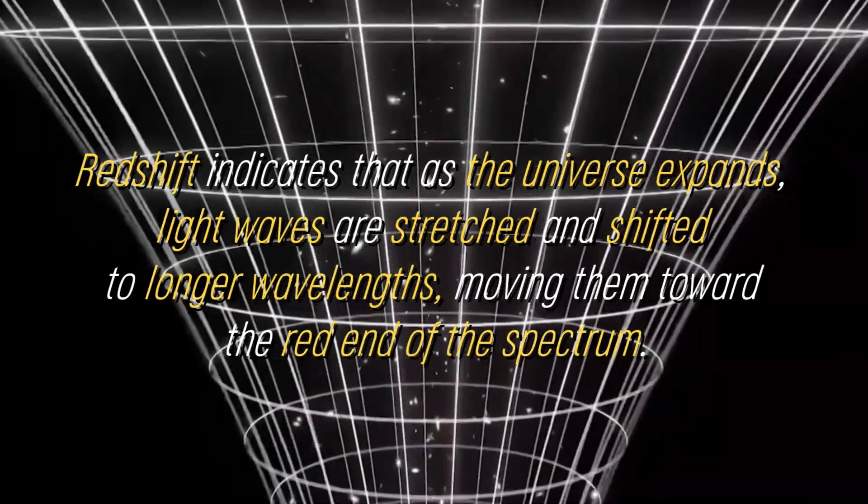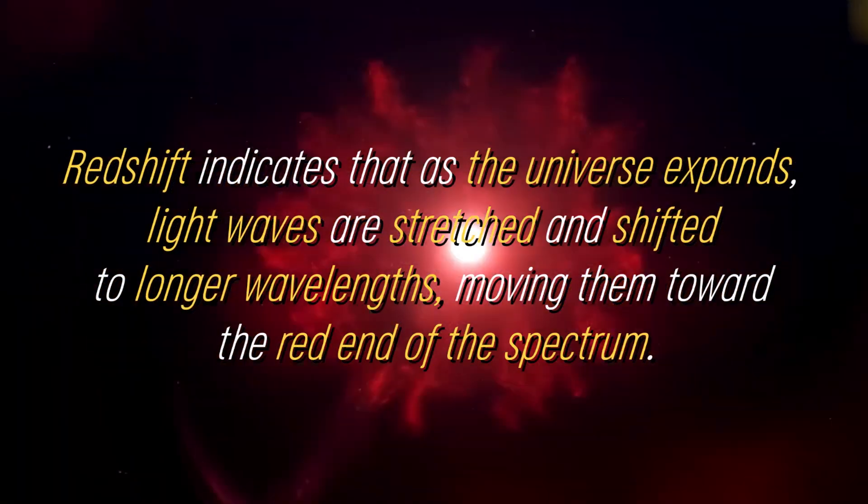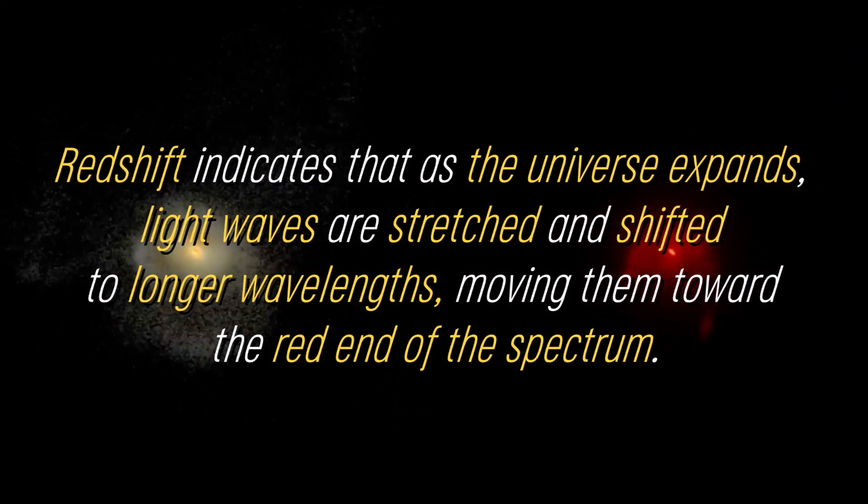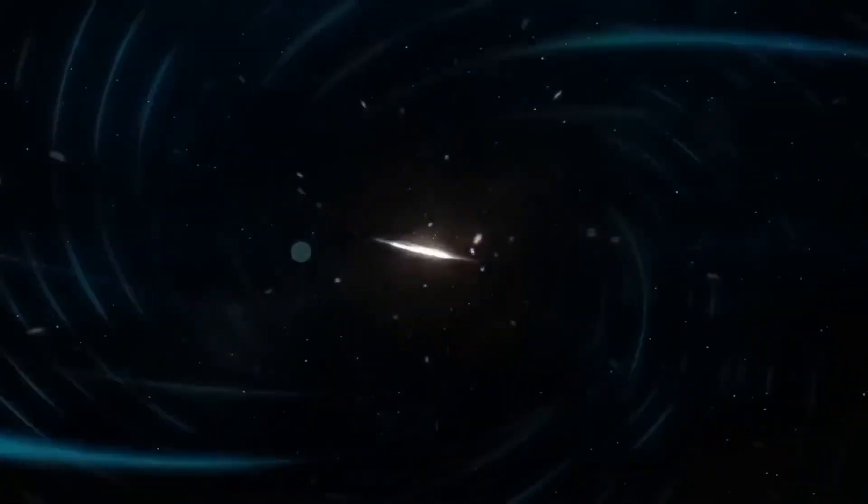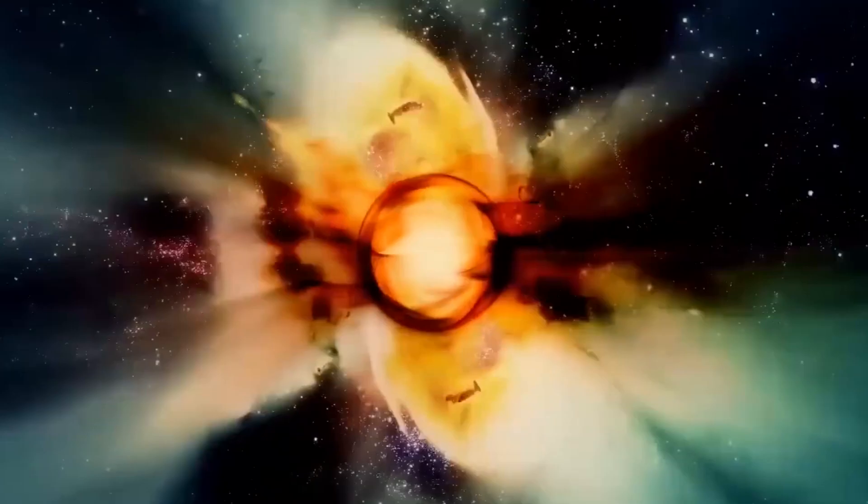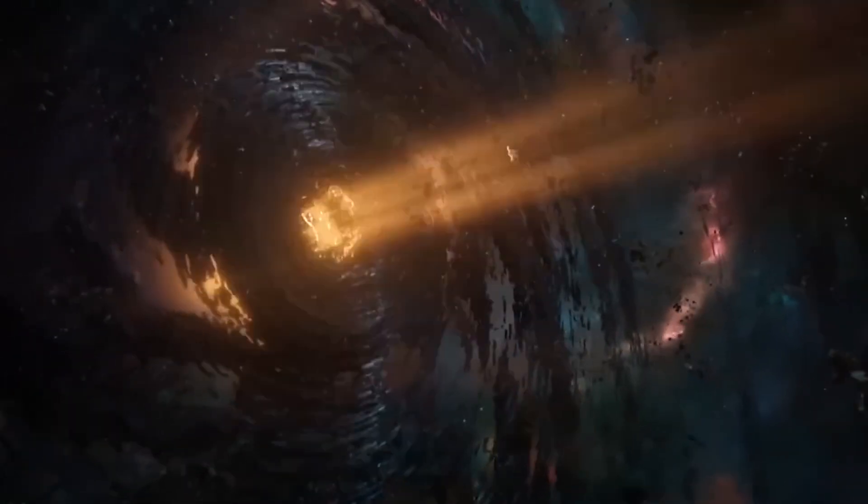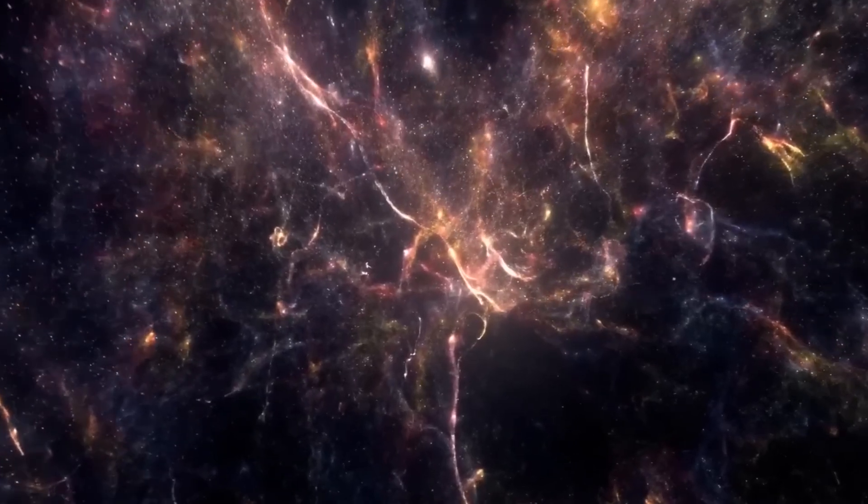Redshift indicates that as the universe expands, light waves are stretched and shifted to longer wavelengths, moving them toward the red end of the spectrum. During the expansion, all the stuff that makes up our universe was compressed into an incredibly small volume. It was clear that matter could not survive in such a compact space, so transformations occurred as the universe expanded and cooled.